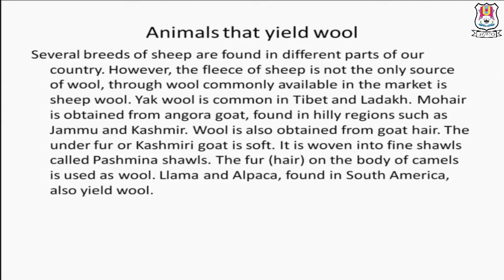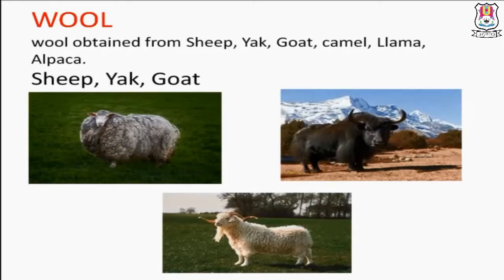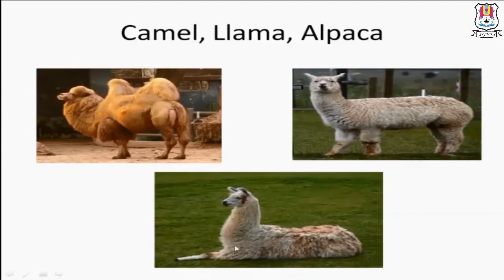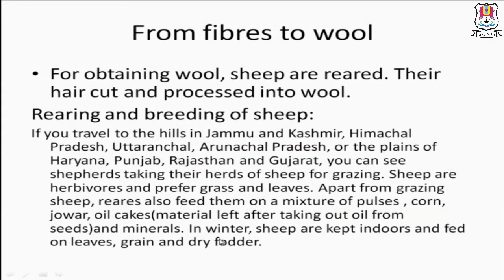To summarize, wool is obtained from sheep, yak, goat, camel, llama, and alpaca. In the pictures shown: first is sheep, second is yak, third is goat, then camel, llama, and last is alpaca.